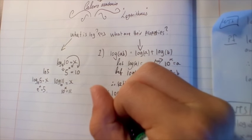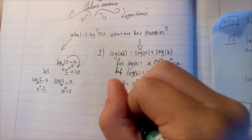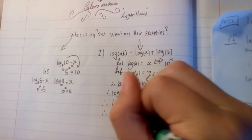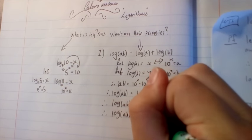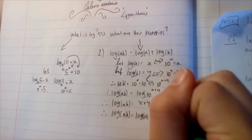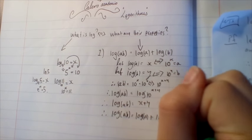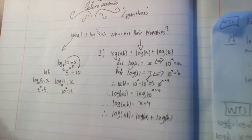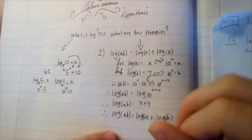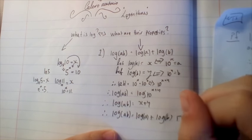Therefore, log of ab is equal to log a plus log b. There — we've just proved it. Success!